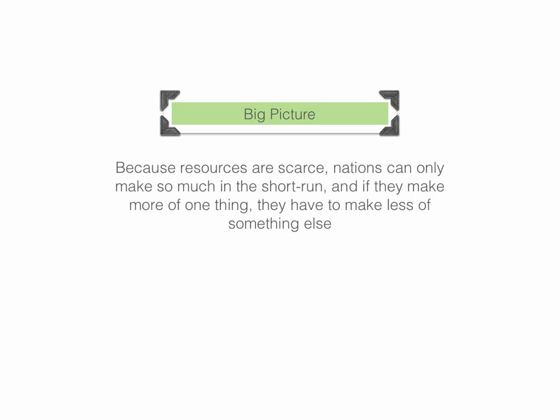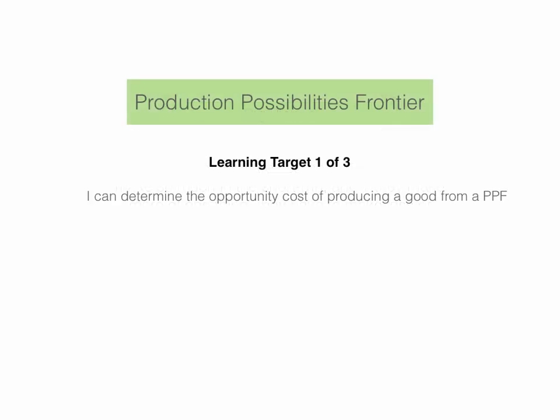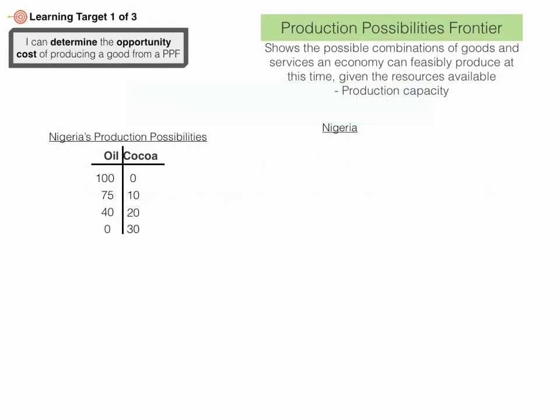The big picture here with production possibilities frontiers: because resources are scarce, nations can only make so much in the short run, and if they make more of one thing, they have to make less of something else. Now let's take a look at just what a production possibilities frontier is. It's a model, and it shows the possible combinations of goods and services an economy can feasibly produce at this time, given the resources available.